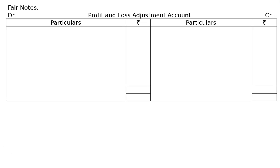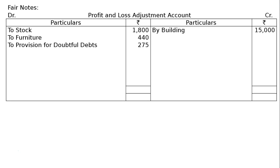Now for the profit and loss adjustment account (revaluation account), draw the proper format. Stock and furniture are to be reduced in value by 10%: stock Rs. 18,000 × 10% = Rs. 1,800; furniture Rs. 440. Building is to be appreciated by Rs. 15,000. A provision of 5% is to be made on sundry debtors for doubtful debts: Rs. 5,500 × 5% = Rs. 275.